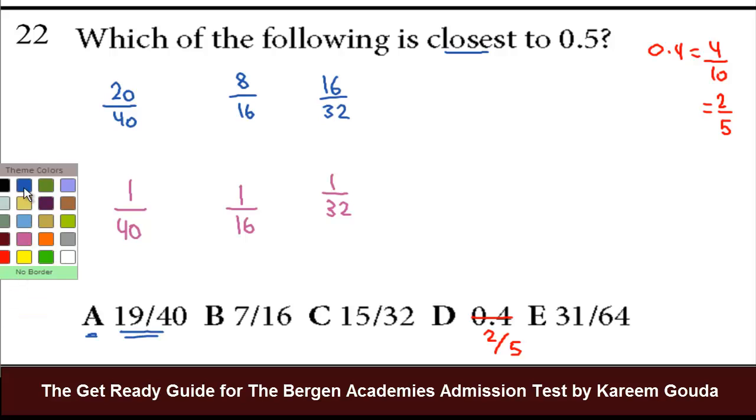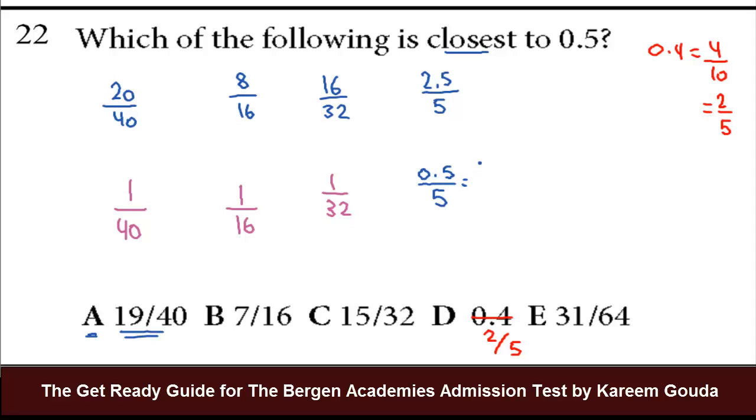Now let's do the same thing with D. Over 5 would be 2 and a half over 5. That's half, because 2.5 is half of 5. So how far away is 2 fifth from 2.5 over 5? It is 0.5 over 5. But wait, all of the answers here, all the differences in purple, are 1 over something. So all I need to do is multiply this by 2. Multiply 0.5 by 2, you get 1. And multiply 5 by 2, you get 10. So the difference is 1 tenth. So the difference in D between 0.4 and half is 1 tenth.